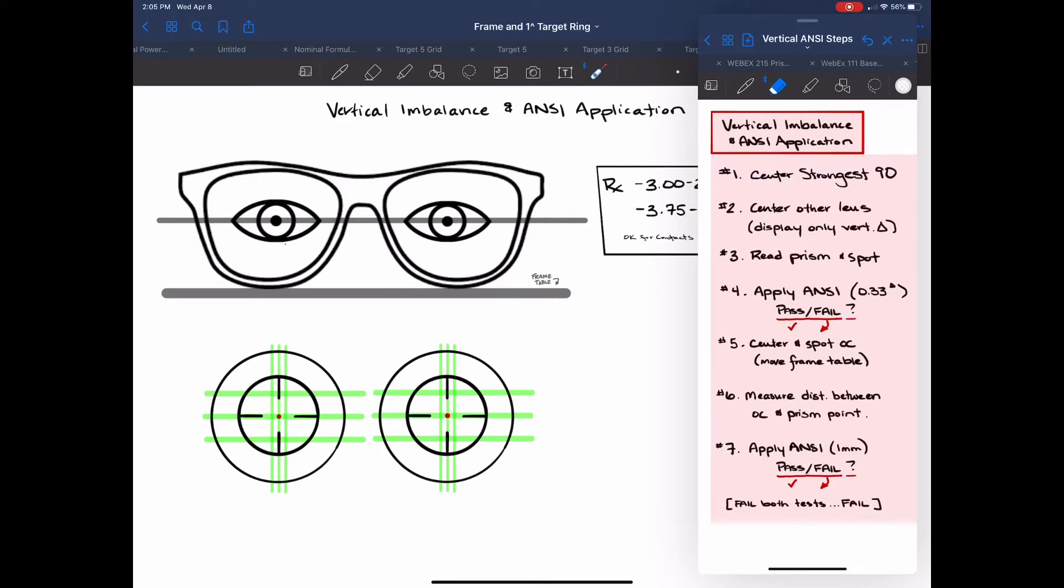In the instructions here we see that the very first thing that we do is center the strongest lens in the 90th meridian and that is because when we actually apply the prism and measure the amount of prism in the glasses we're going to measure that in the weaker of the two lenses. So let's start with that first.